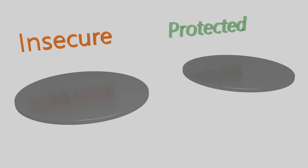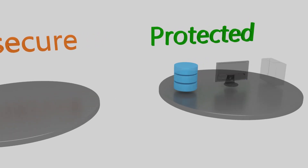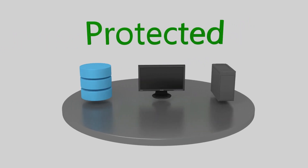When we're thinking about network security, we can roughly classify our networks in two ways: insecure networks that we need to access, and protected networks that we need to defend. Our protected networks contain our resources, which may include workstations, servers, databases, and anything else that should be kept secure.